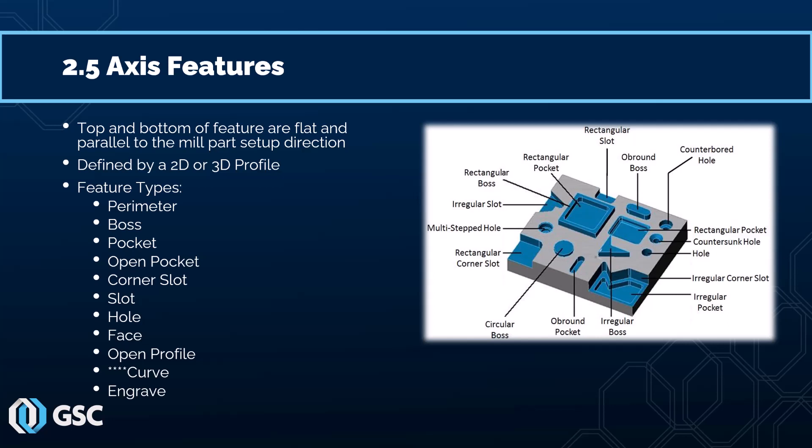One thing to point out: pockets do have subcategories, such as rectangular, circular, irregular, or obround-shaped pockets. We don't have to do anything extra to define them as a specific type — the software does that on its own.